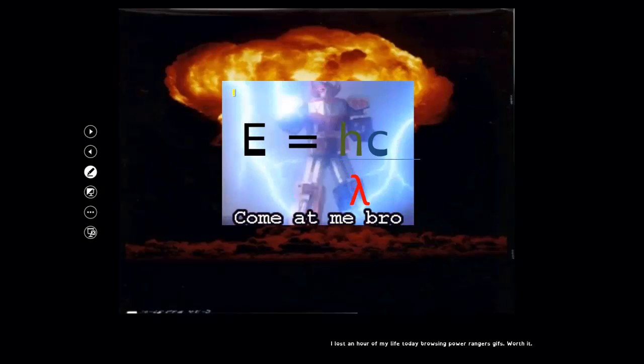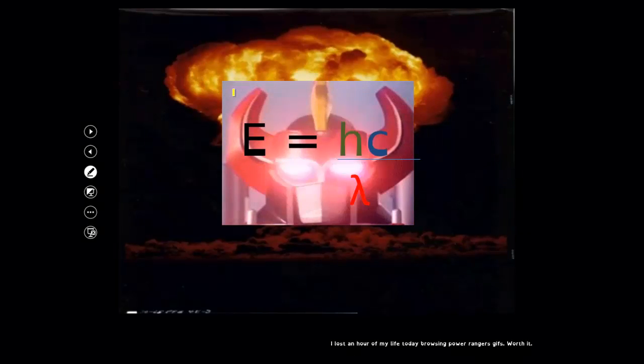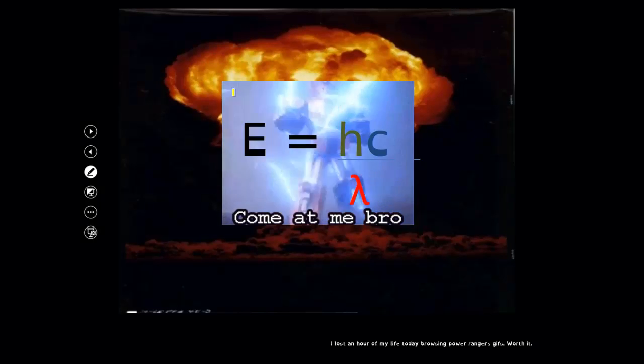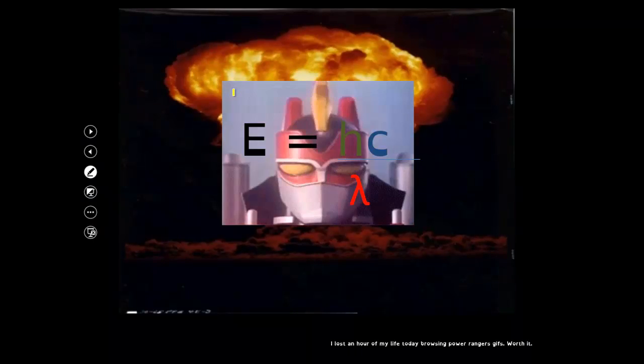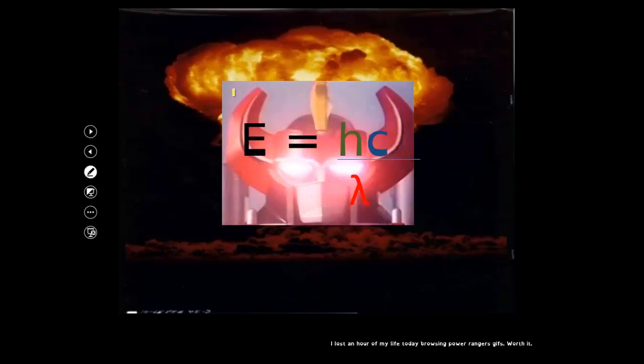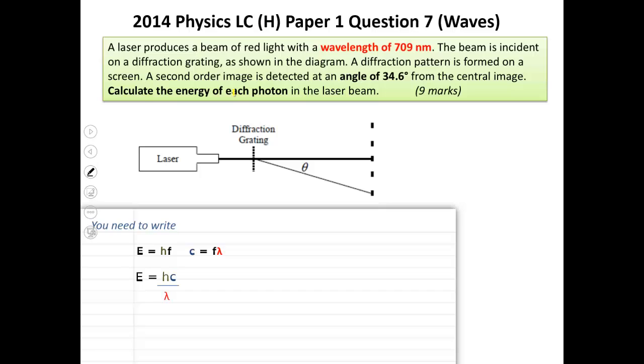So it's a bit like Power Rangers, we've got one formula, another formula, you combine them into one mega formula, E equals HC over lambda. That is not in the log tables, but I just flip and learn that one off. That comes up so much, E equals HC over lambda, or you can just have fun combining them all day long in the Leaving Cert if you want.